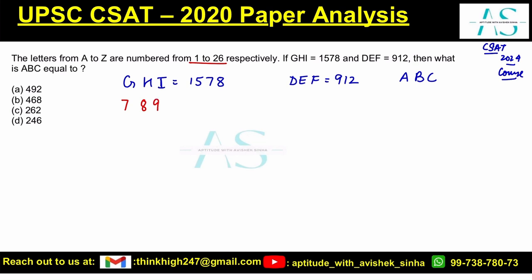We have 7, 8, 9 and here we have 1578 — it is nothing but two times of it. Let's check the next one: D, E, F is 4, 5, 6. Again, 4, 5, 6 multiplied by 2 gives 9, 1, 2. So we have the common connection — multiply by 2. For A, B, C, the ranks are 1, 2, 3, so the value would be two times that: 2, 4, and 6.